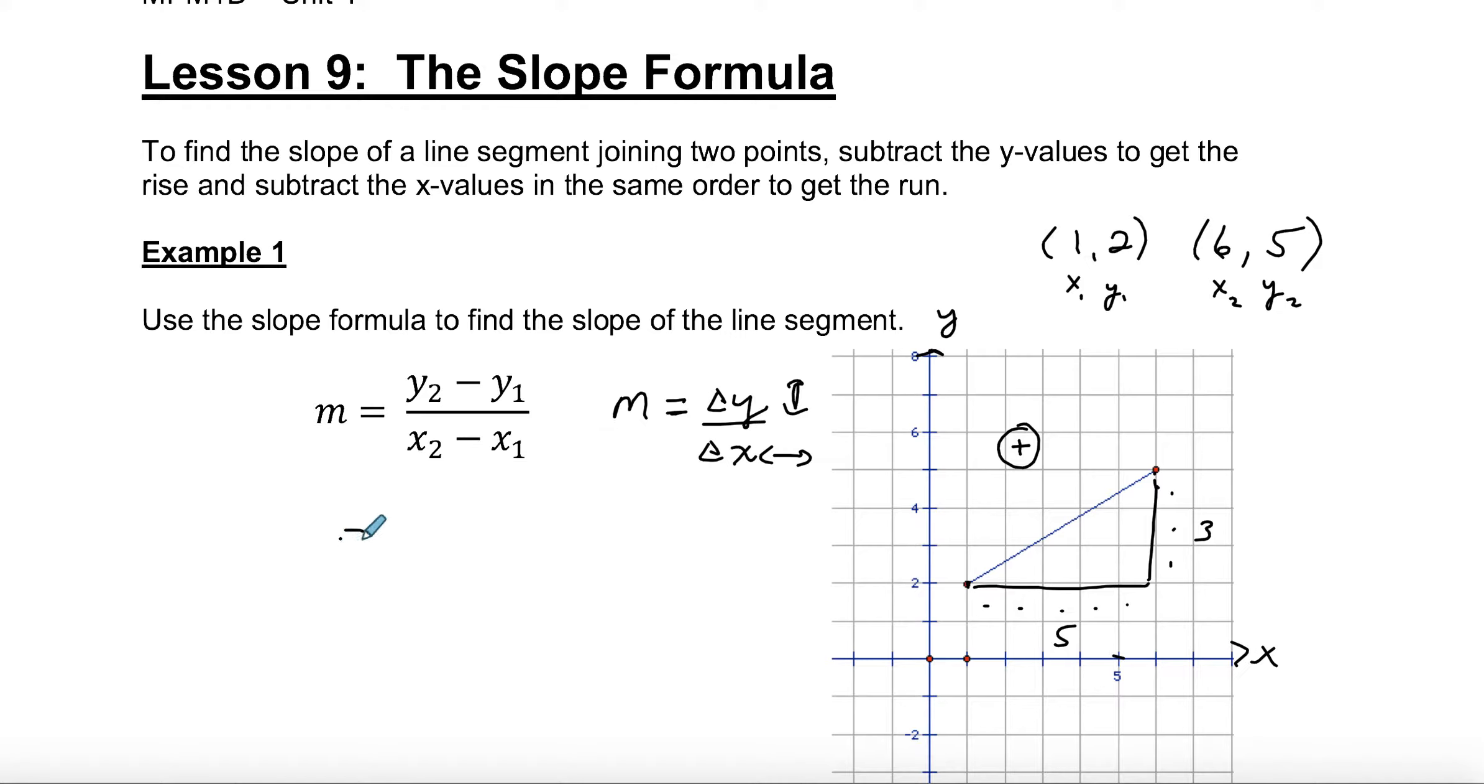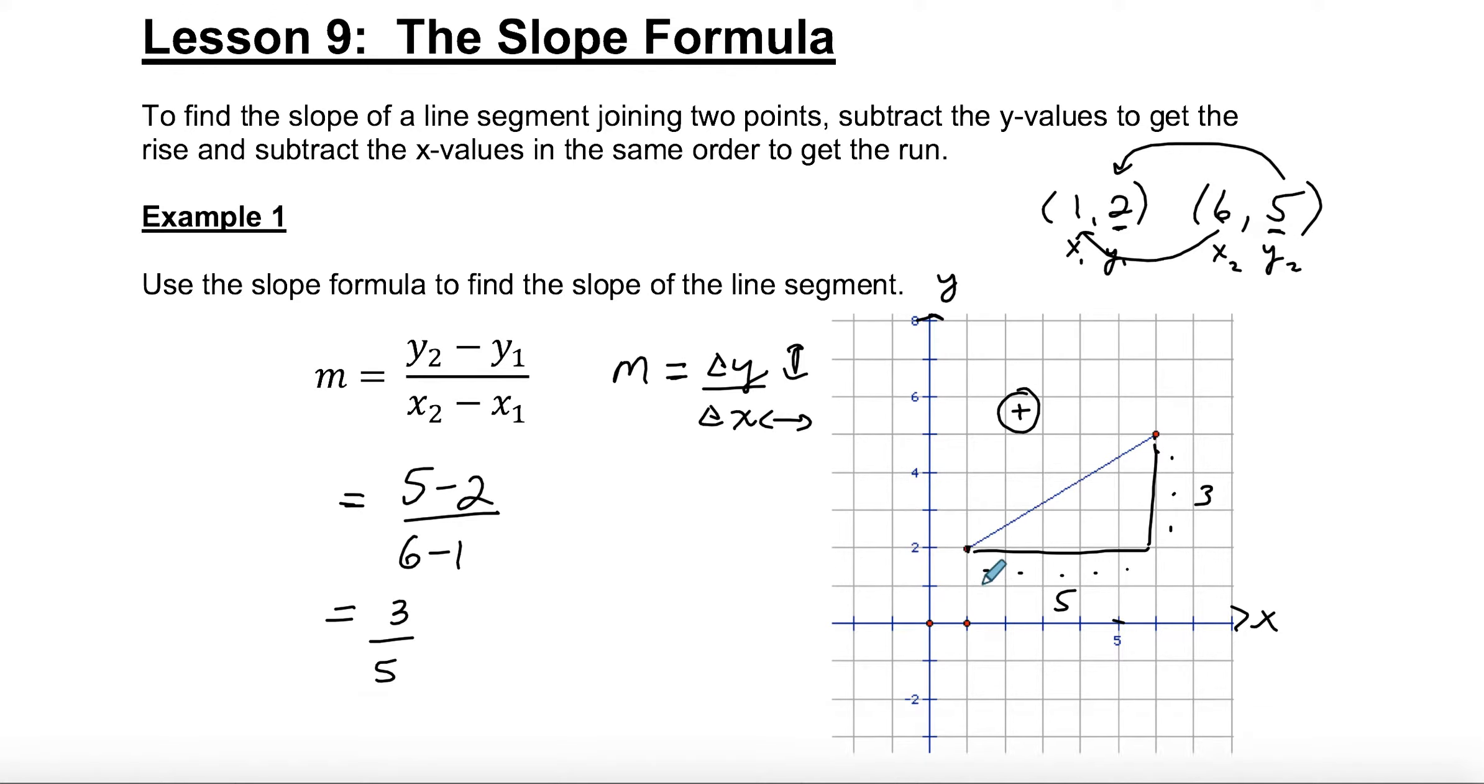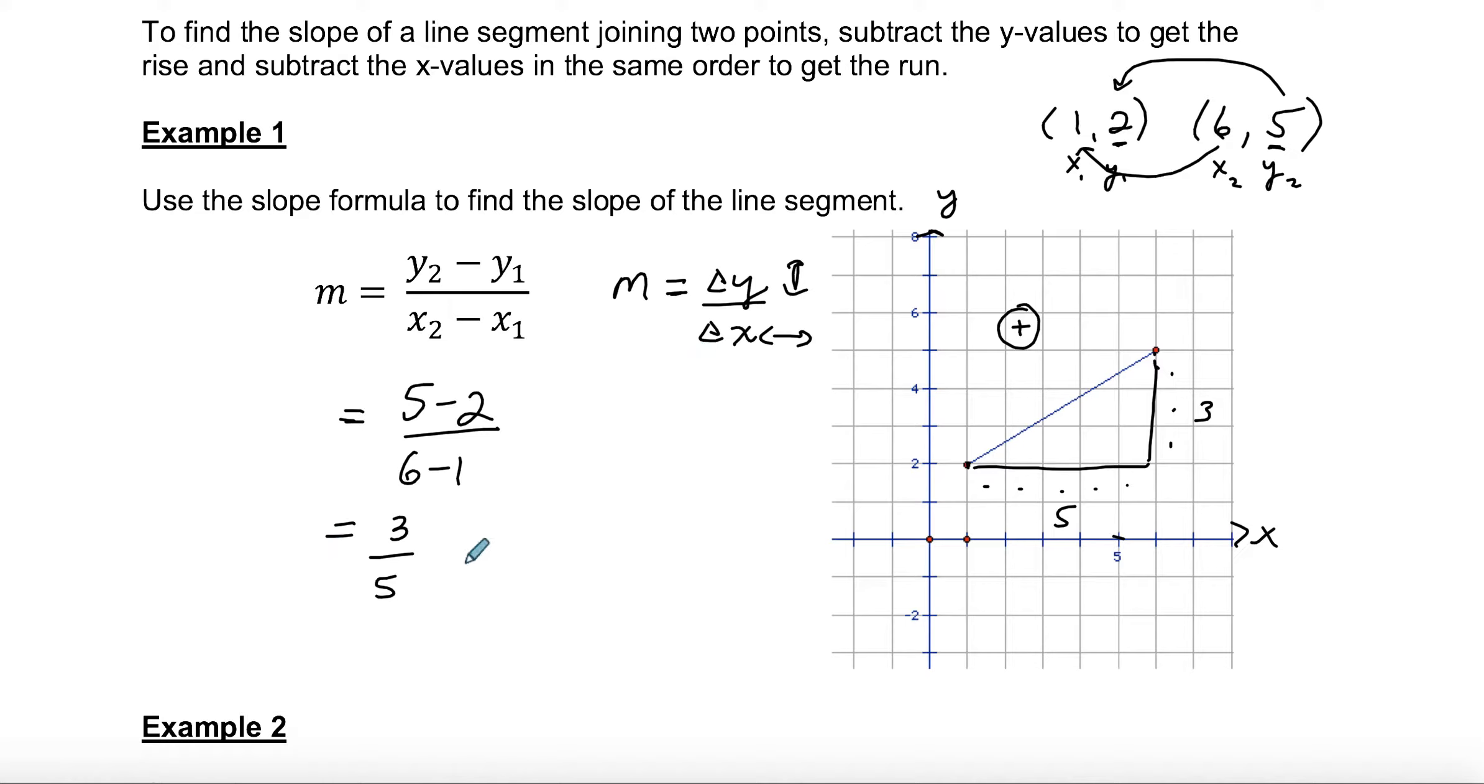The formula says y2 minus y1 over x2 minus x1. A lot of students have trouble with this. The y's are the second number in the ordered pair, and the x's are the first number. So when I do my y's, I would do 5 minus 2 over, and then I do my x's, 6 minus 1. And 5 minus 2 is 3, and 6 minus 1 is 5. So we would get the same thing, 3 fifths, just like we would get here if we had a graph. But if we didn't have a graph, and all we had was two points, this would be a much better and faster formula to use instead of having to draw graph paper.